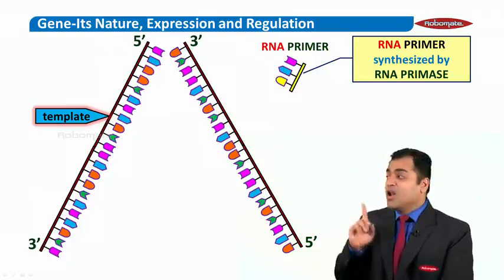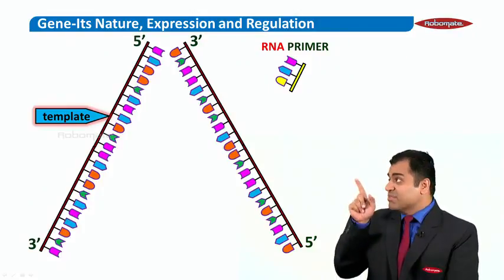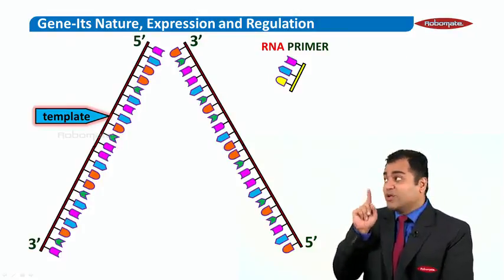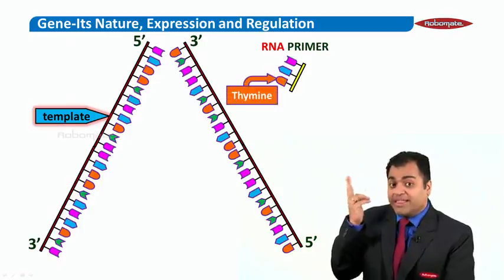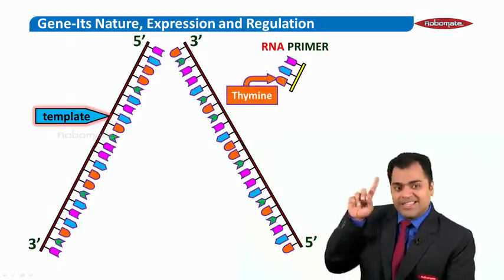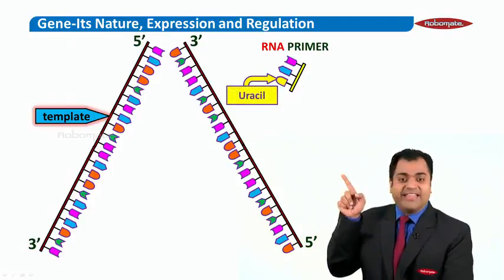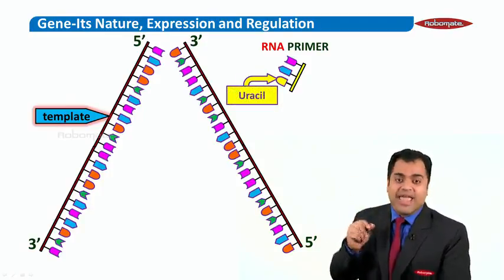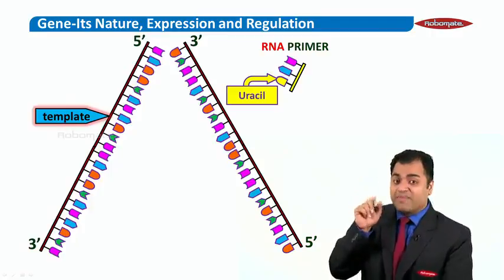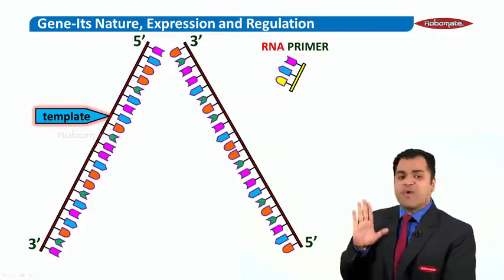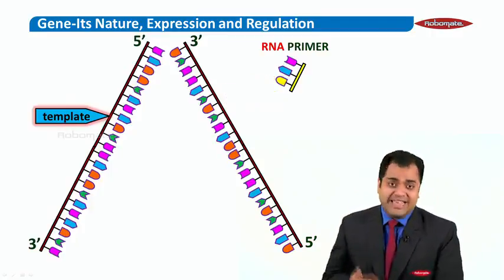Now, look at that RNA primer carefully. Look at that yellow symbol. You know that if it was orange, that would be thymine, and that would be DNA. But this is RNA, so I have changed the color to yellow. And that yellow is uracil. That's why you know that is an RNA primer. Now, what does this primer really do? Let's see that next.